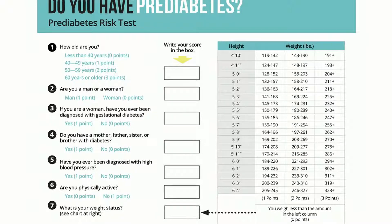To clarify on question five, it needs to be an actual diagnosis, not just a one-time occurrence. Question six: are you physically active? Zero points for yes and one point for no. Question seven: what is your weight status? For example, a woman who is five-foot-five and weighs 155 pounds would give herself one point. Scroll across to find your height and weight, and the point system is shown at the bottom.